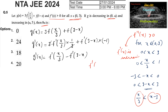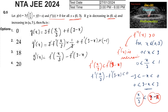Since f'' > 0, f' is increasing, so f'(x/3) < f'(3-x). That implies f'(x/3) - f'(3-x) < 0, so g'(x) = f'(x/3) - f'(3-x) < 0, meaning g is decreasing.